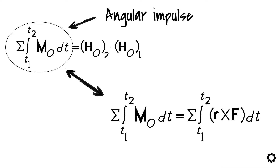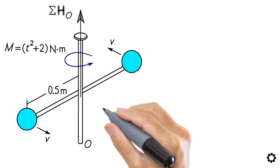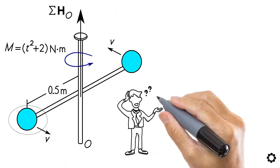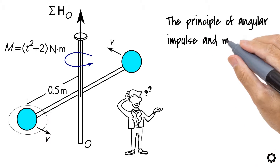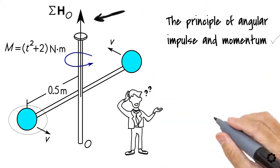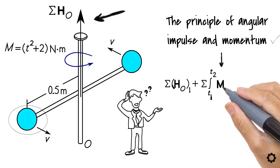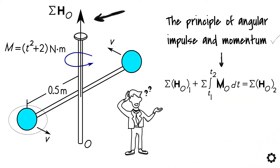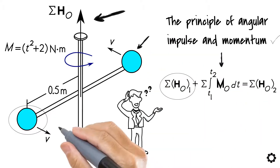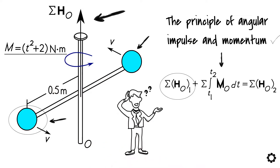What if we want to solve the final angular momentum of the whole system, and not just of a single particle? How could we apply the principle of angular impulse and momentum in that case? Well, we can apply it as shown in this equation. Here, the initial angular momentum of all the particles will be altered by the angular impulses that are given to the particles.